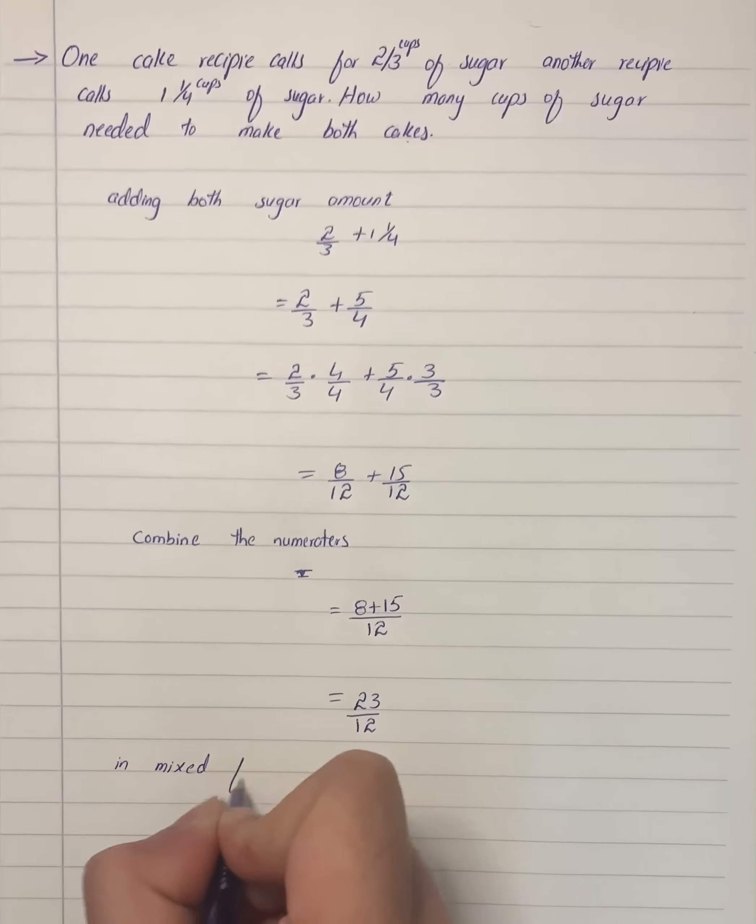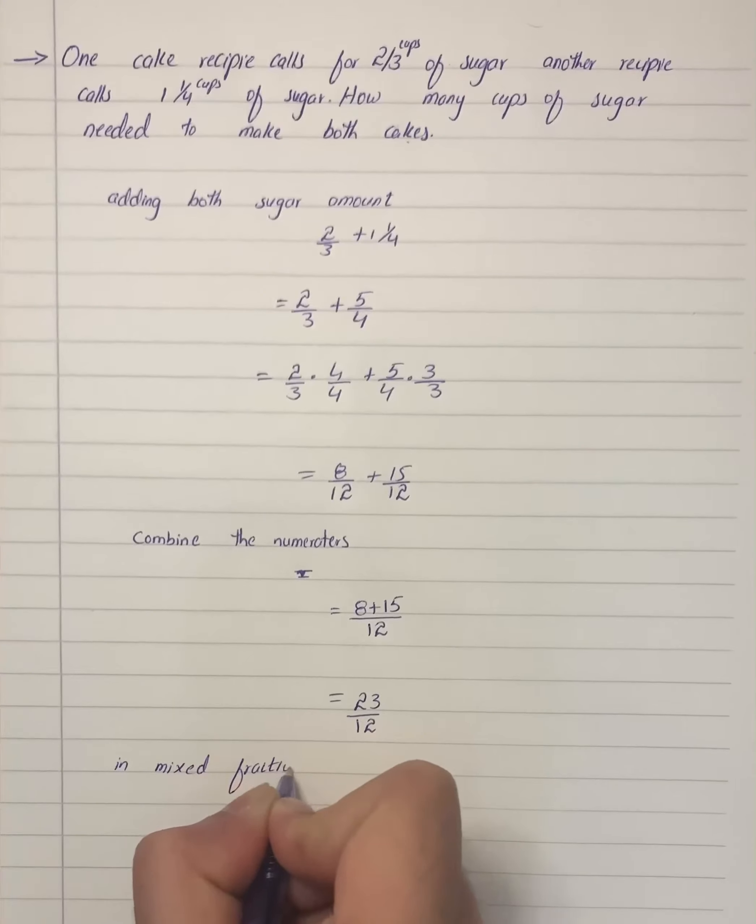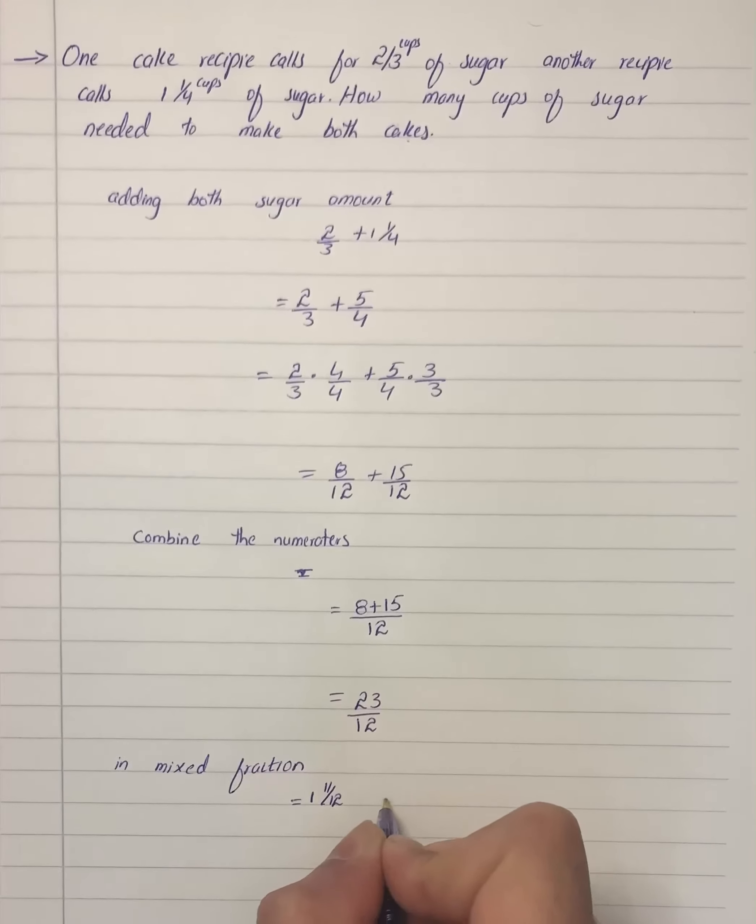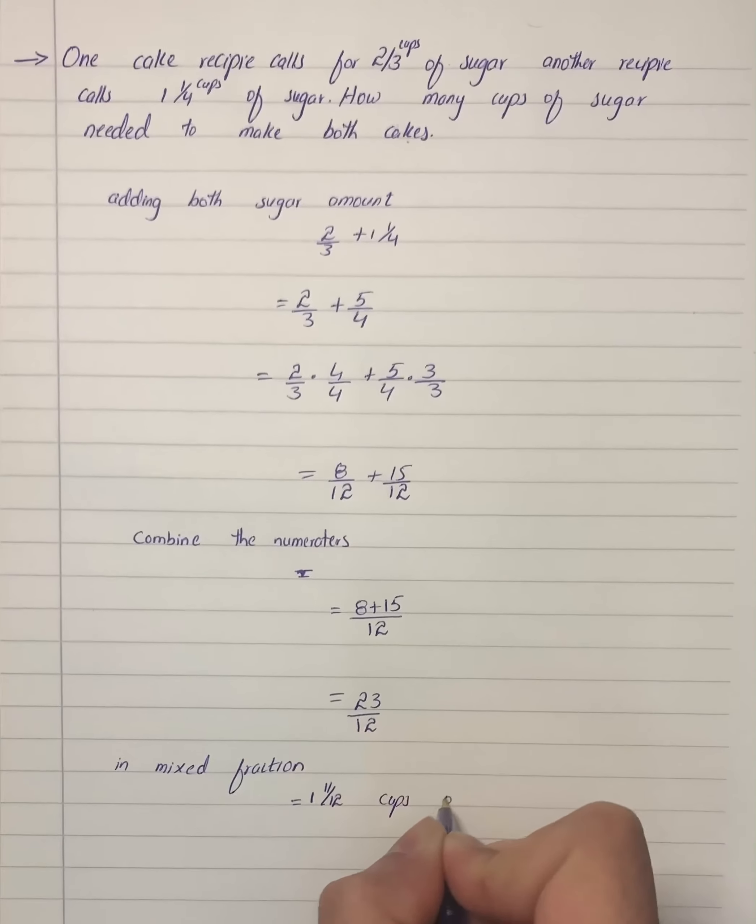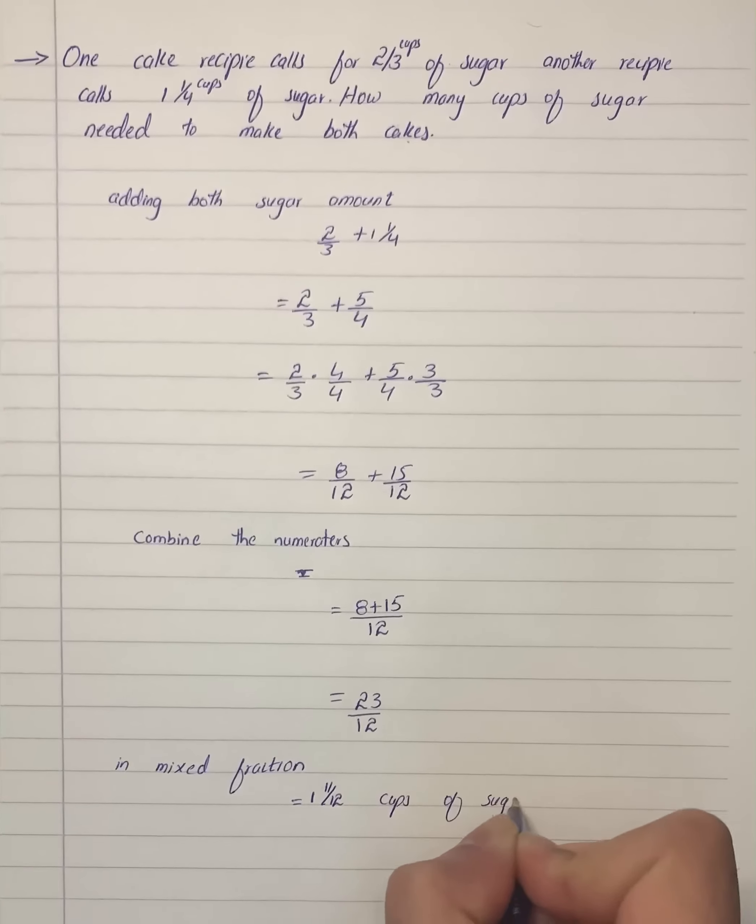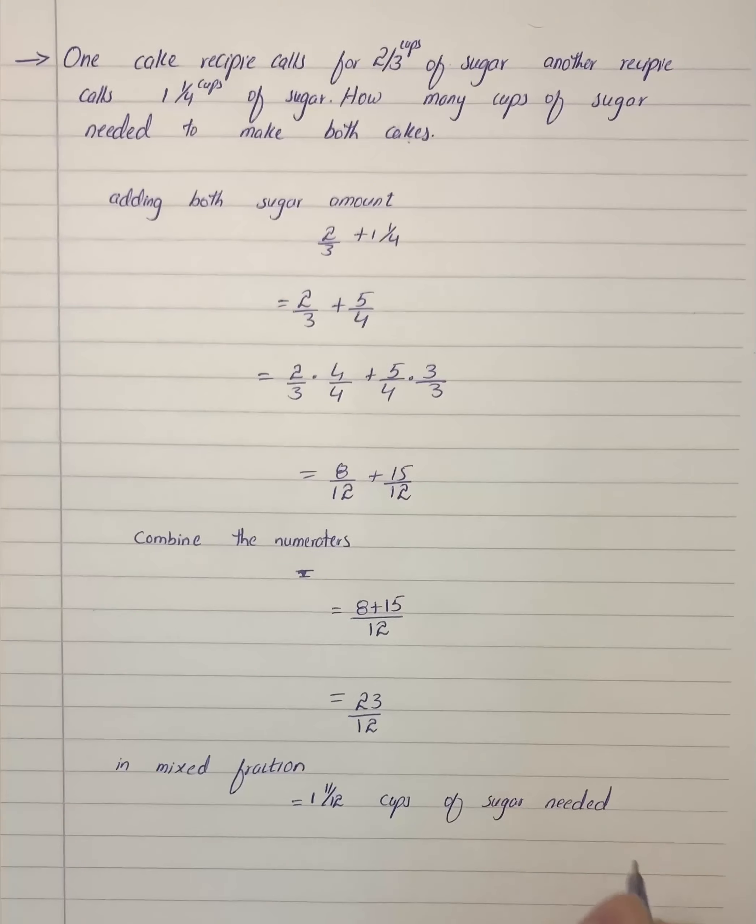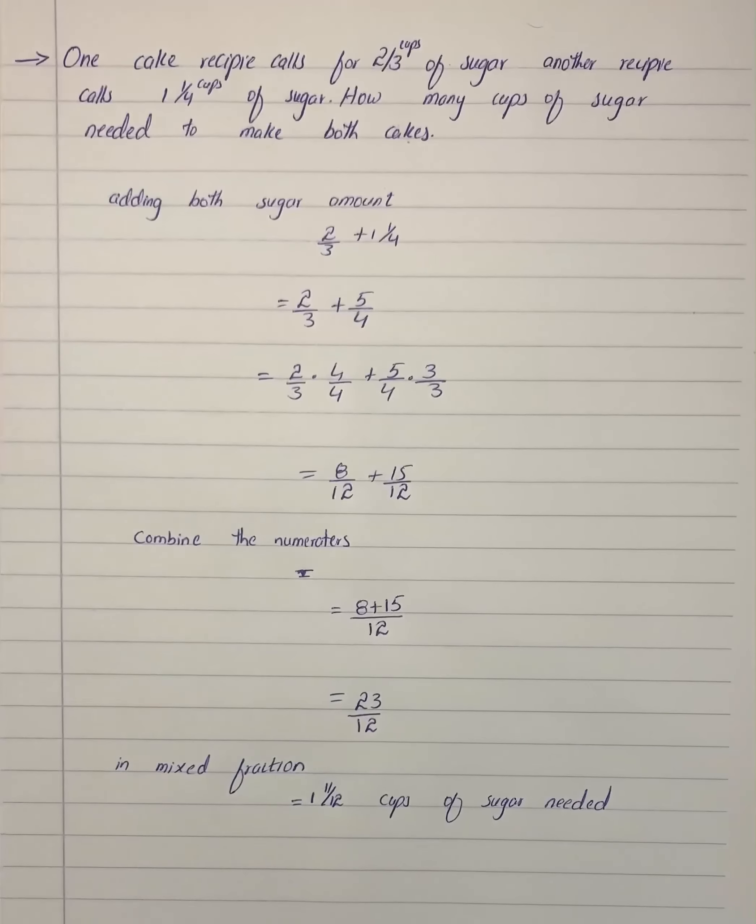As a mixed fraction, one and eleven by twelve cups of sugar are needed. So here we have our exact amount of sugar required for the given condition.